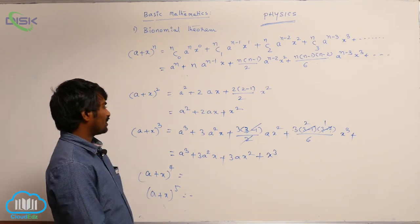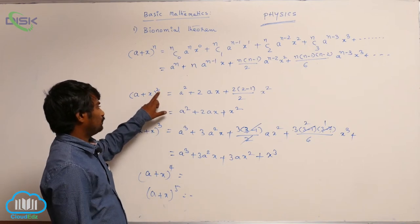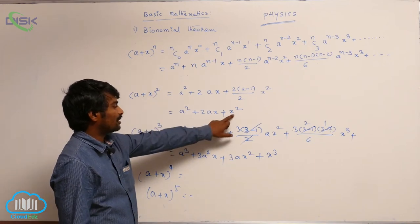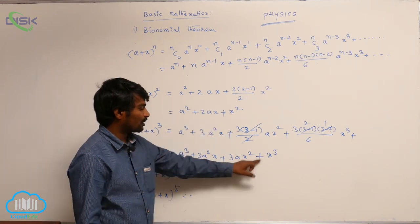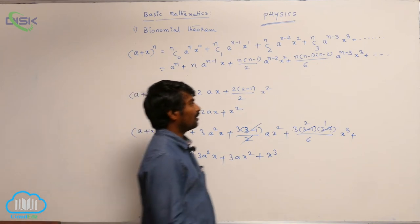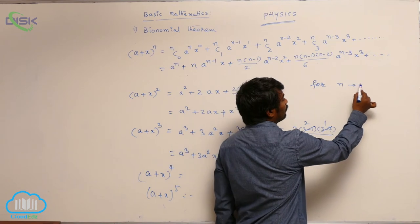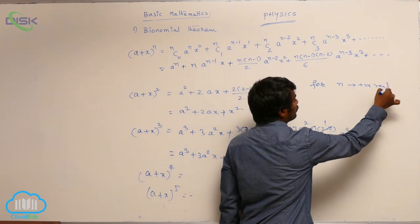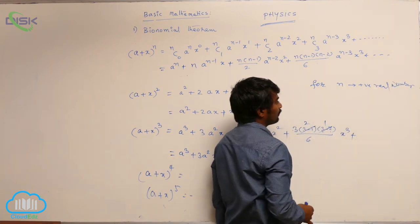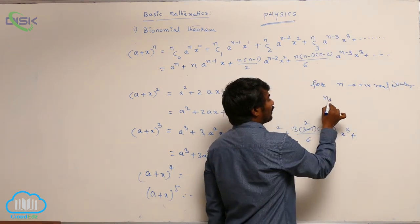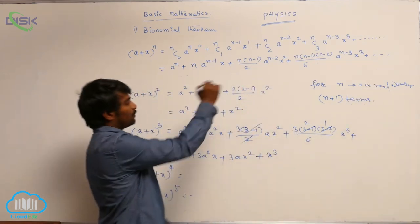Now, an observation: if n is 2, I got 3 terms. If n equals 3, I got 4 terms. That means for n a positive real number, we are having n+1 terms in this expansion.